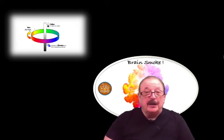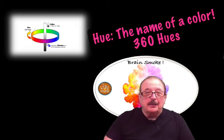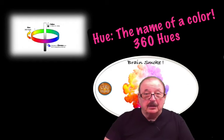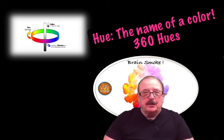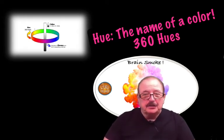First of all, the word is hue, H-U-E. Hue is the name of the color. And it is a horizontal measurement around the color wheel, meaning that it is a complete circle.